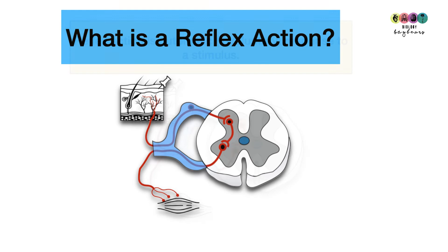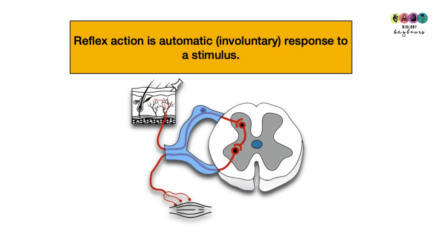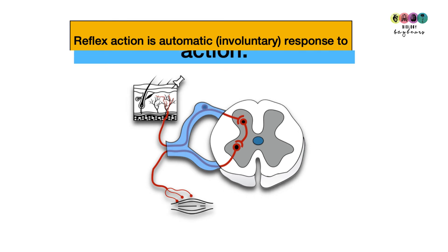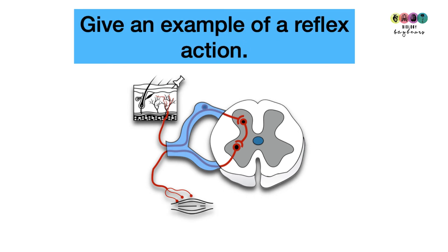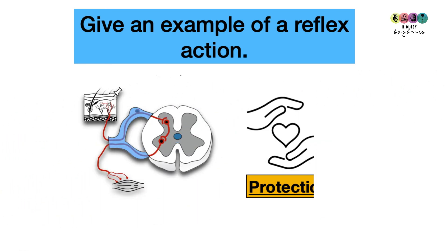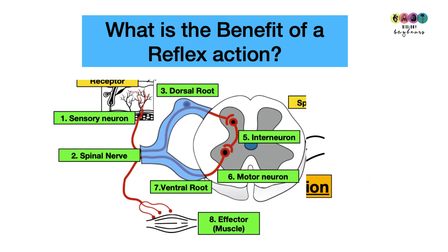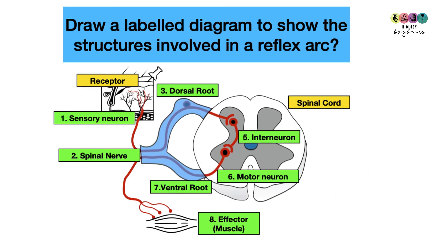Next question: what is a reflex action? It's an automatic involuntary response to a stimulus. Give an example — pulling your hand away from a pin or a flame, or blinking and sneezing. What's the benefit of a reflex action? Protection.